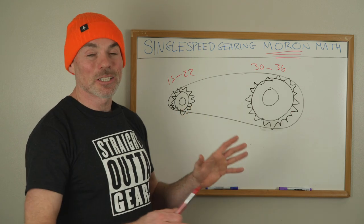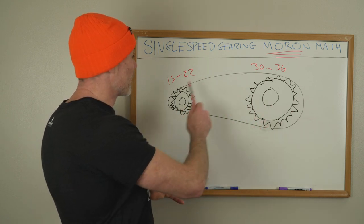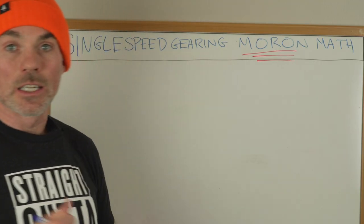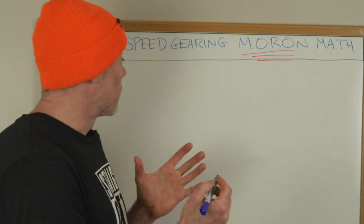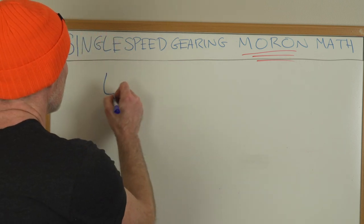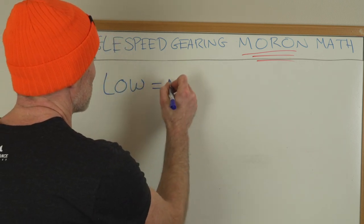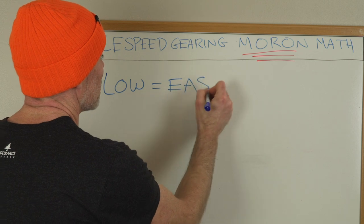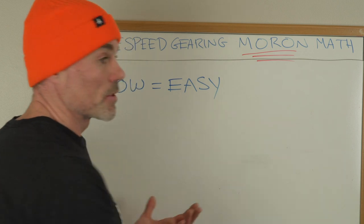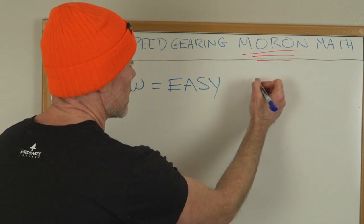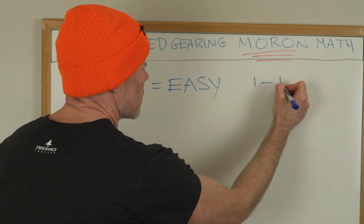So we talk about a drivetrain in the case of a single speed: chain ring, cog. That's what we're talking about. All right, just so we're on the same page, vernacular-wise. When you're talking about low gears, that equals easy. So on your geared bike, you know, you generally have, let's say you have a 12-speed drivetrain, you have gears from 1 to 12.